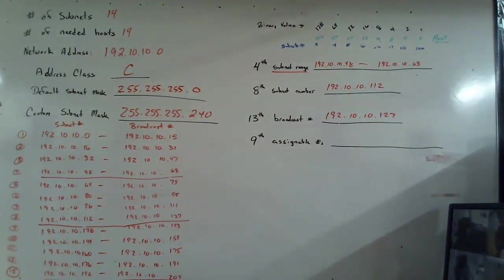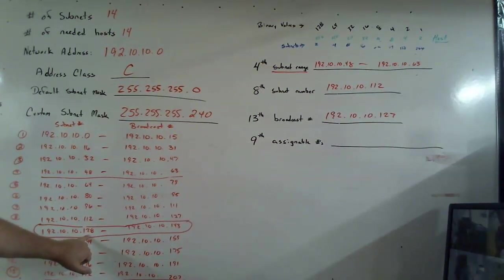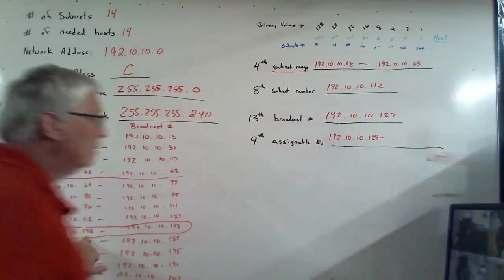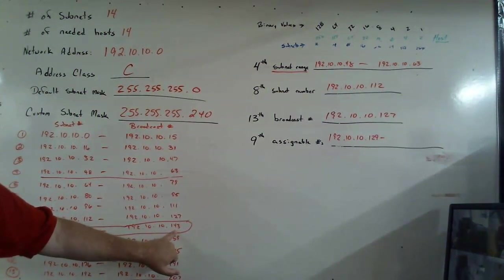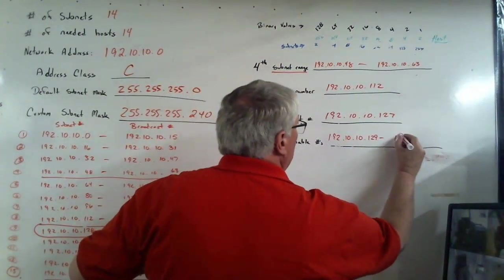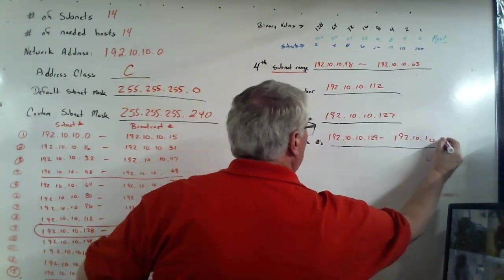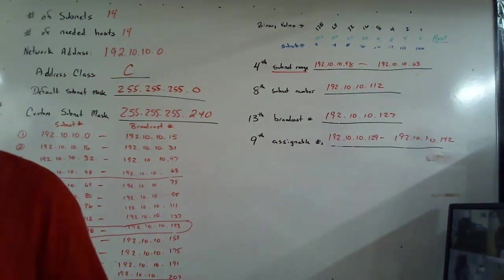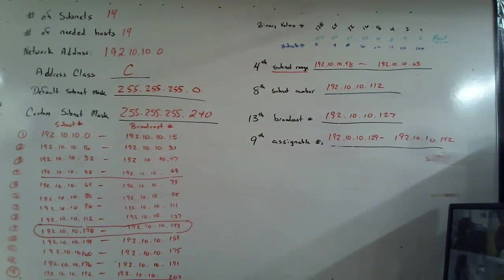Last but not least, the ninth assignable. Again, I have to find the ninth. And it happens to be this range here. That starts at 128, goes to 143. But this is the assignables. I can't assign the first one. I cannot assign the last one. So I need the numbers in the middle. So we're going to add one to the left. One plus 128 makes 129. So 192.10.10.129. We're going to subtract one on the right. It happens to be 143. I subtract one, and it's 142. So 192.10.10.142. And there I have my questions answered for subnet ranges, for subnet numbers, for broadcast numbers, or for assignable numbers. We're going to do one more. So hang tight as I get ready.